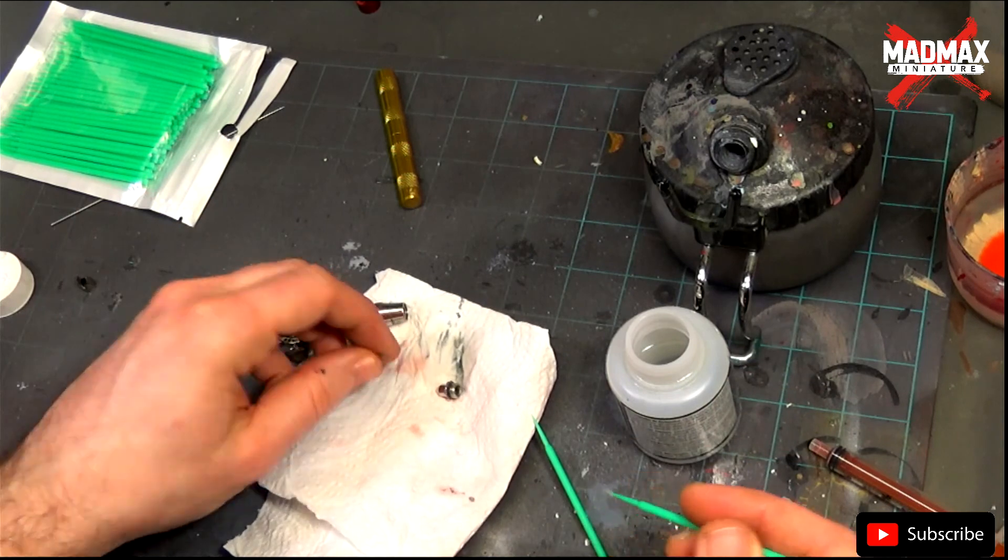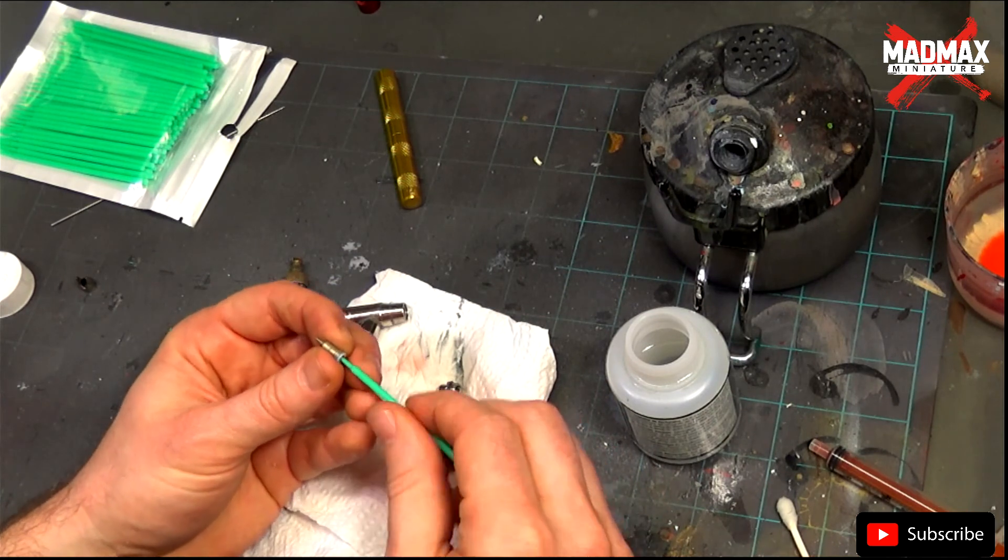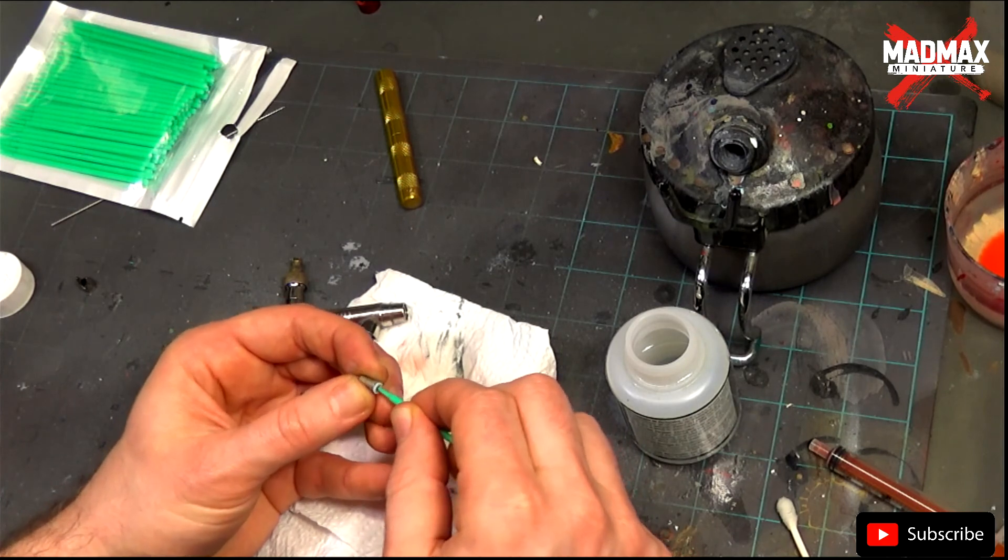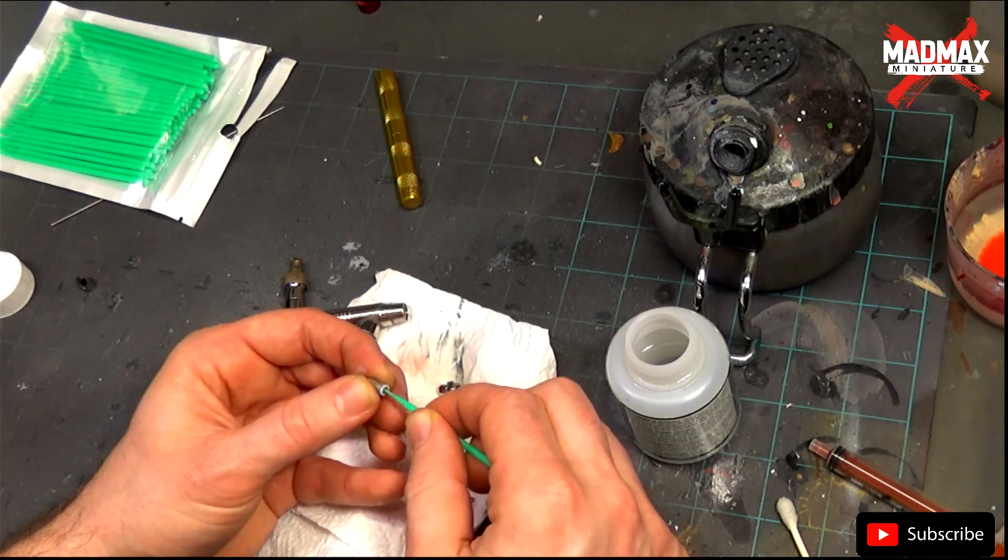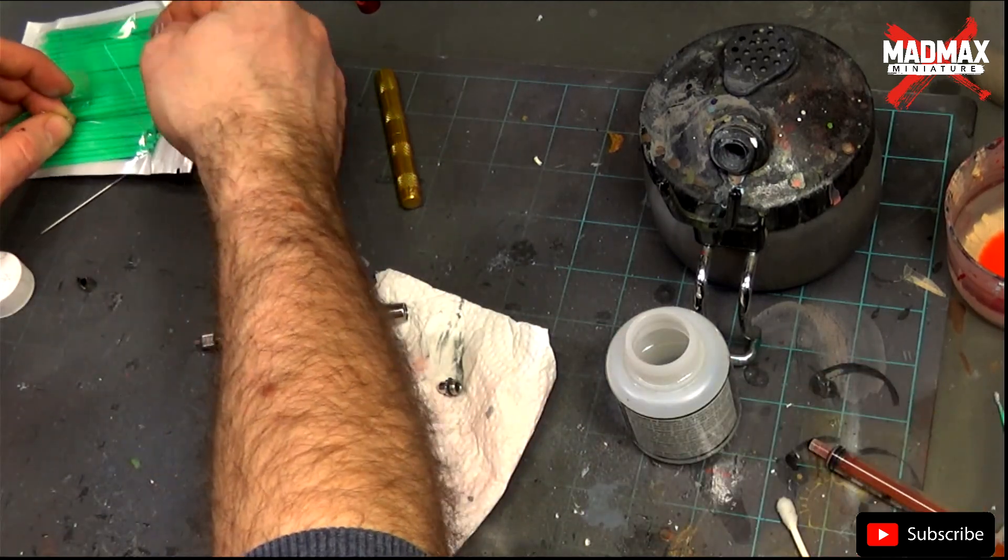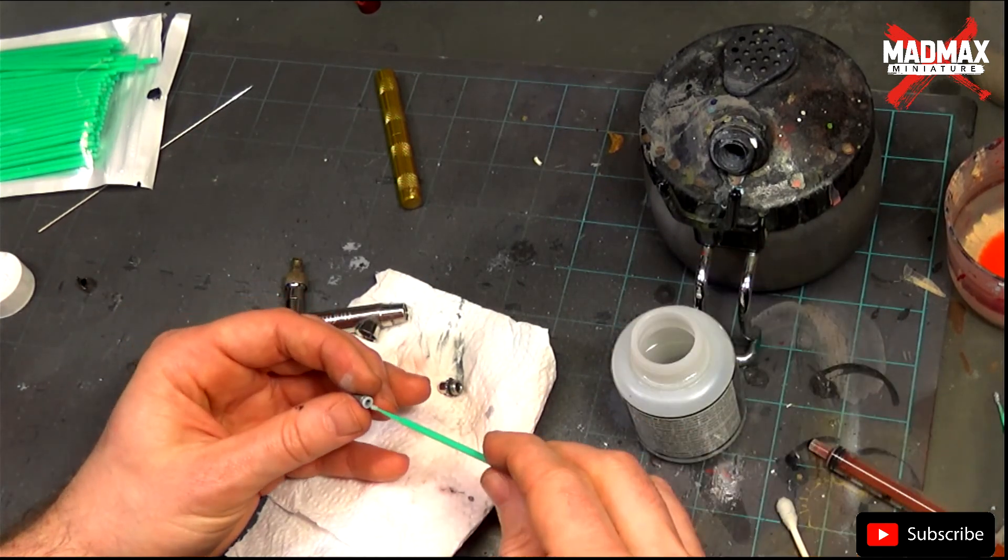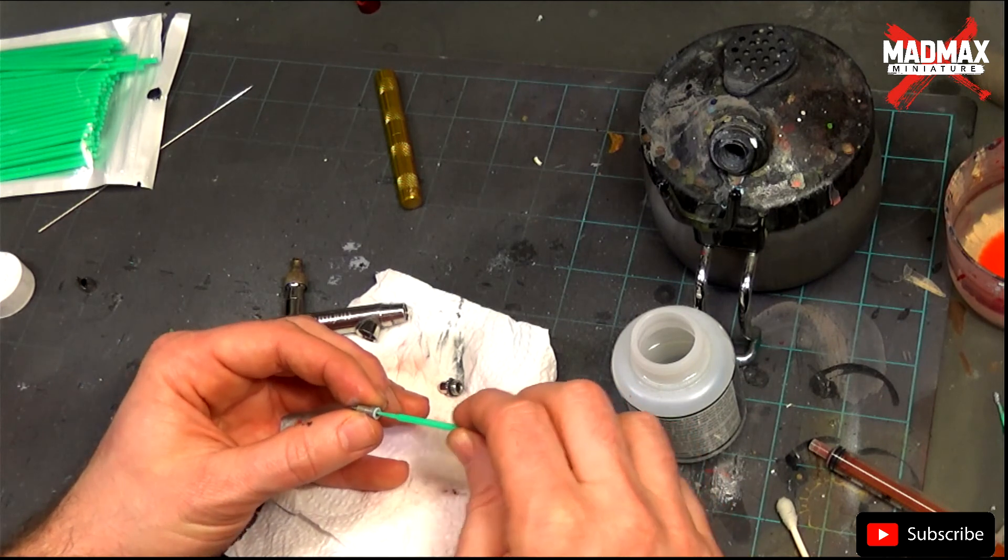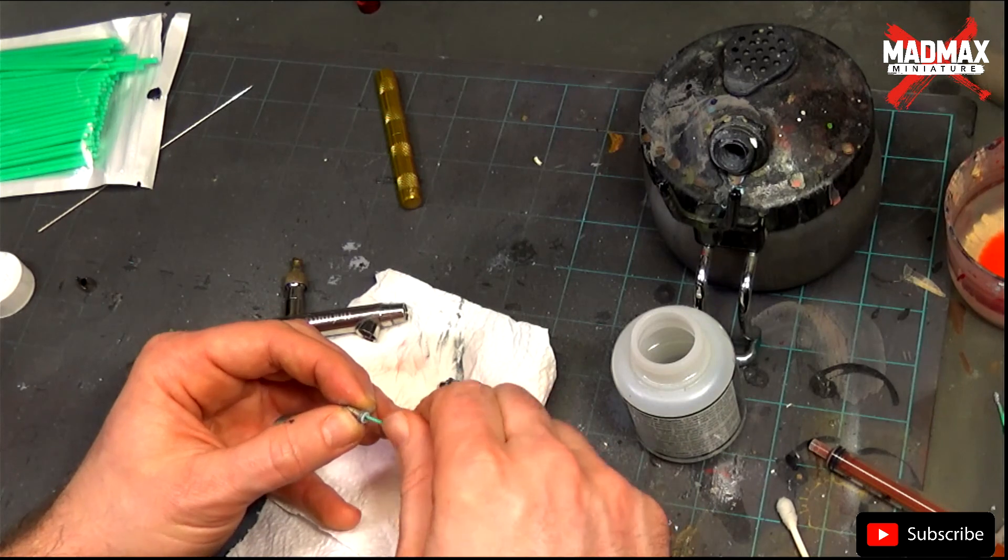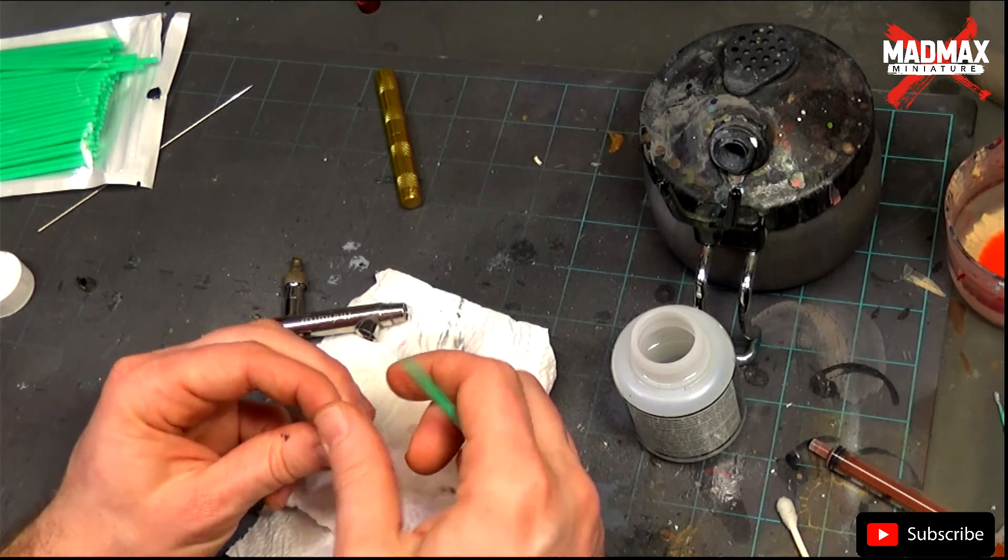I will now clean the inside of the nozzle. Be careful with that piece as it is a very fragile piece. As you can see, I have airbrushed some chrome paints and it is really hard to remove. Even if I keep cleaning, the swabs are just getting dirty every time. So when this happens, you will have to soak the pieces into airbrush cleaner.